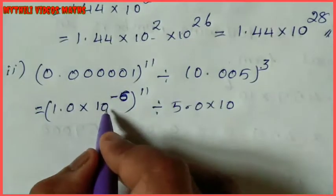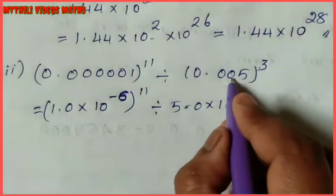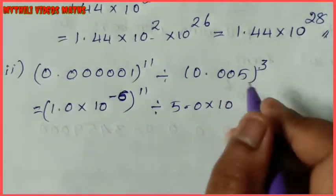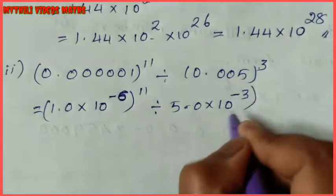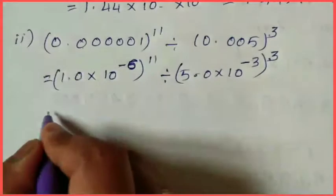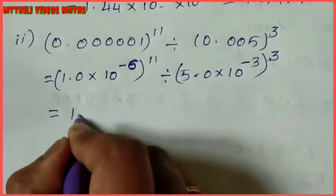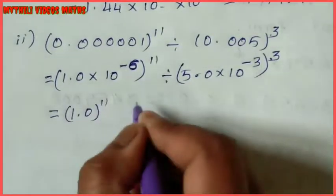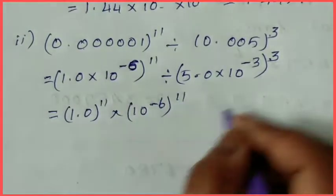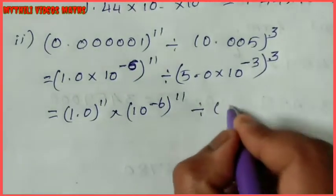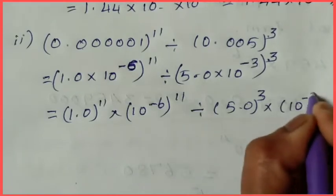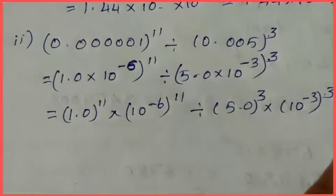Count the digits. Since the last digit is on the right side, we use minus. So minus 3, whole power 3. Next line, splitting: 1.0 whole power 11 into 10 power minus 6, whole power 11. This is divided by 5.0 whole cube into 10 power minus 3, whole cube.